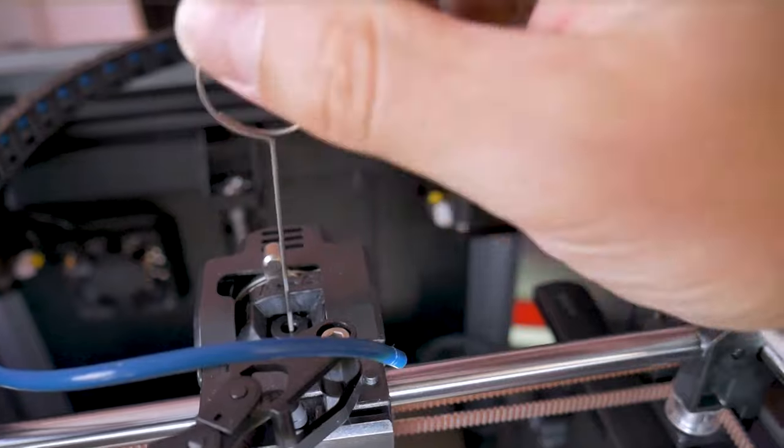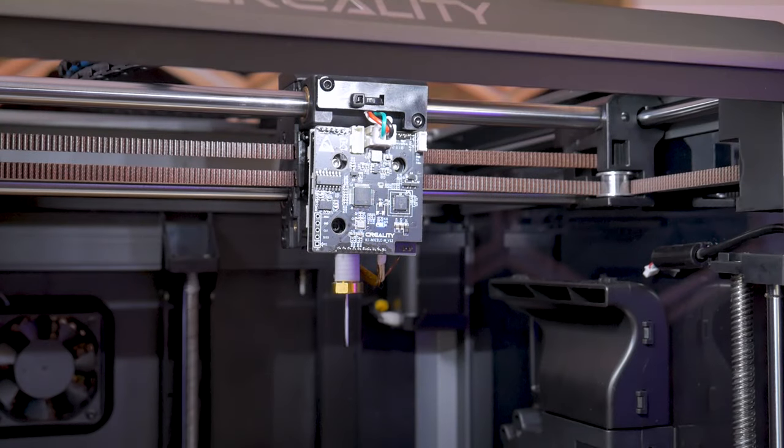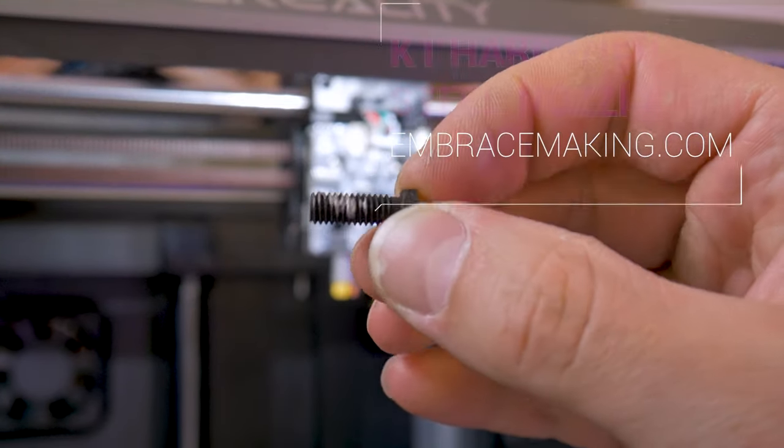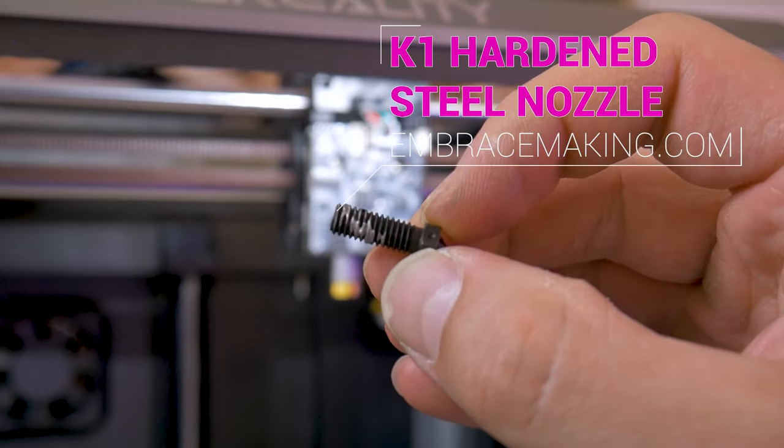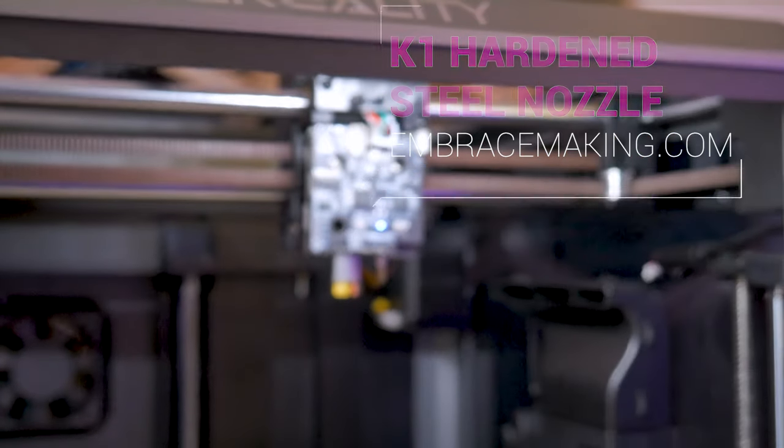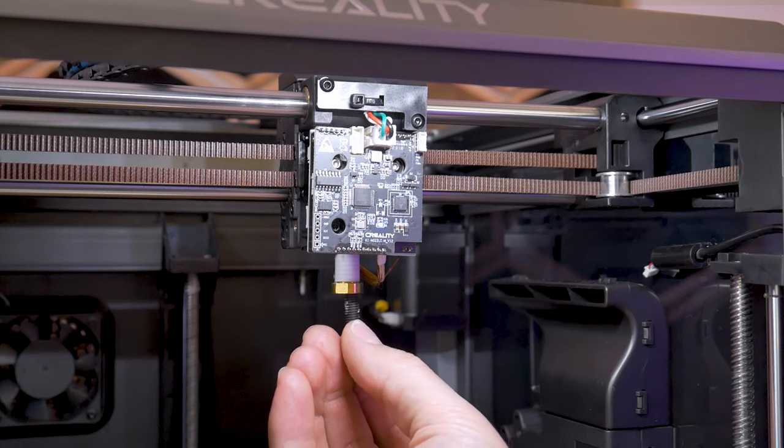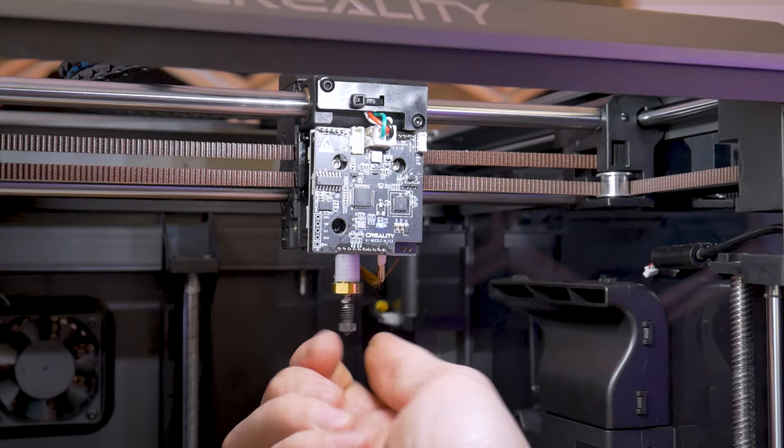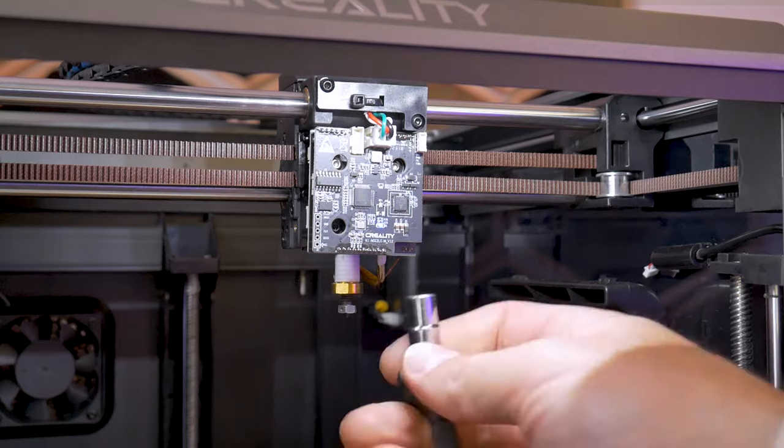Up at the top of your print head, you can unlock the extruder and use the included tool with the K1 to push any remaining filament through. Now we can grab our hardened steel nozzle, and again, this one is from my web store embracemaking.com. We're going to begin to thread that in to the hot end.